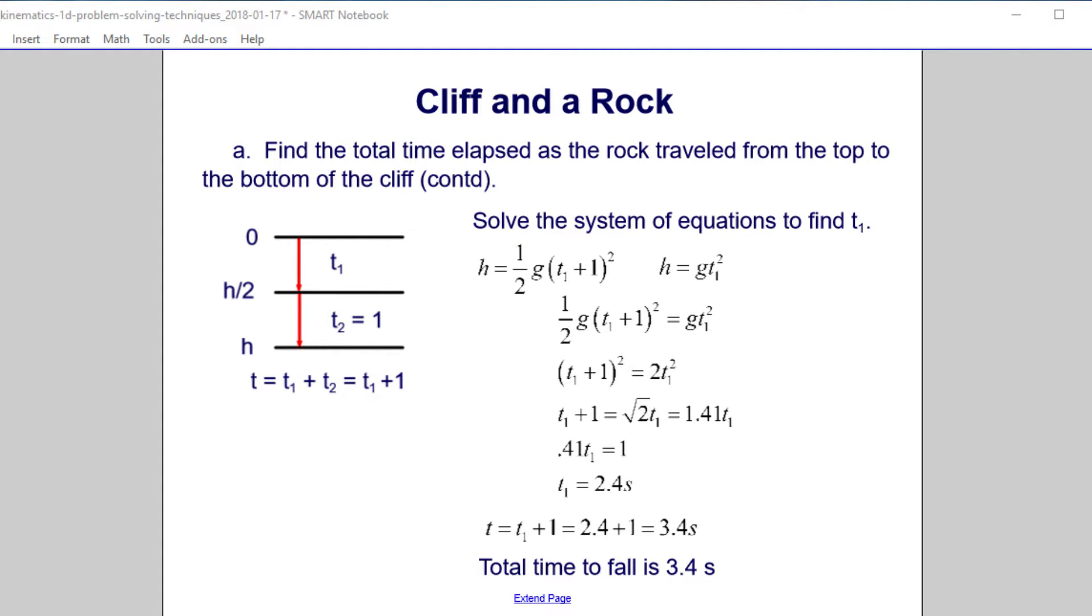We now have our system of equations. We have two equations, both in t1, which is nice, right, because they're both equal to h. So we just set them equal to each other. We have this term right here. We cancel out the g's, multiply through by 2, we get this expression.